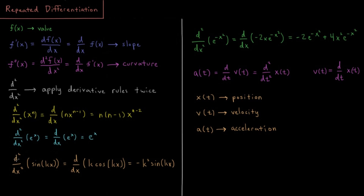And we have things like sine — if we have sin(kx), the first derivative of that through the chain rule is going to be k times cos(kx). And if we take the derivative of that again using the chain rule, we will get negative k² times sin(kx).